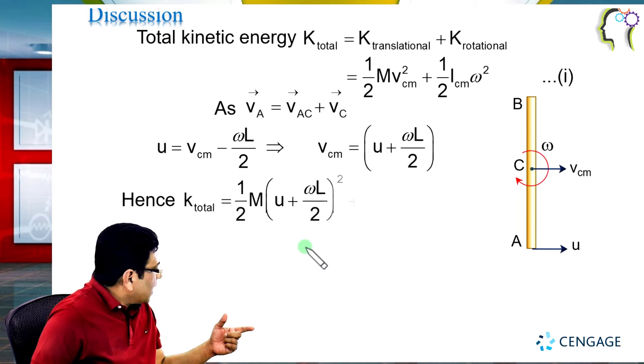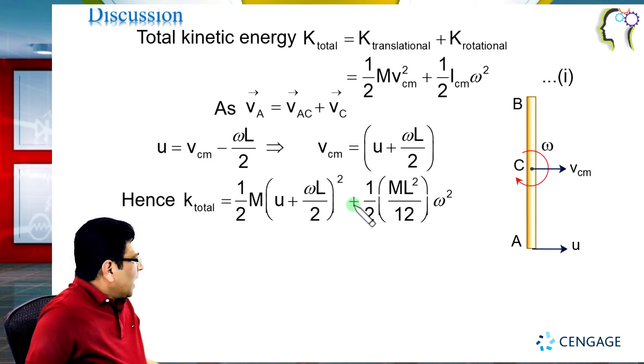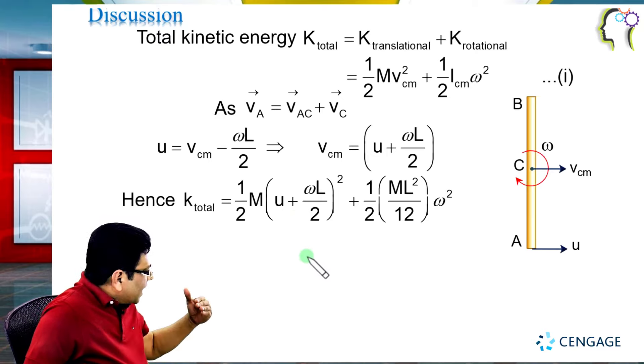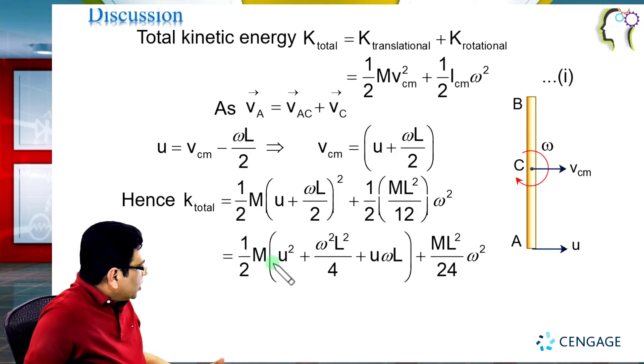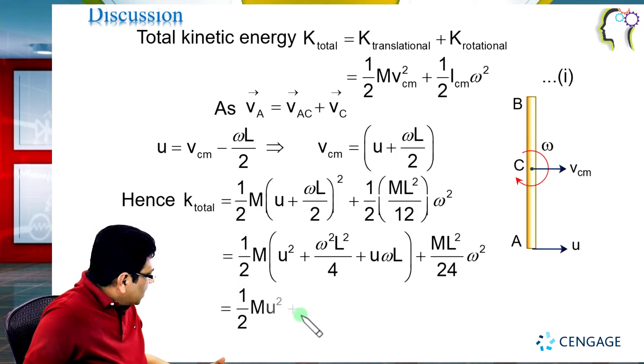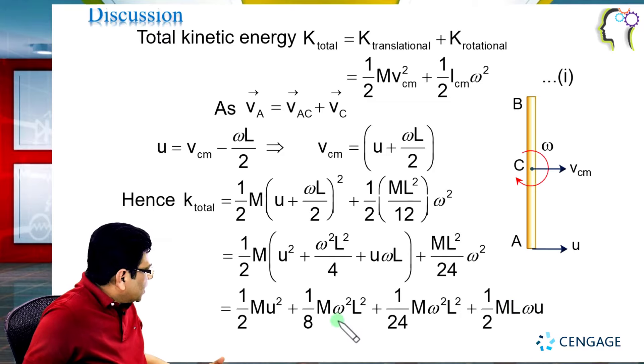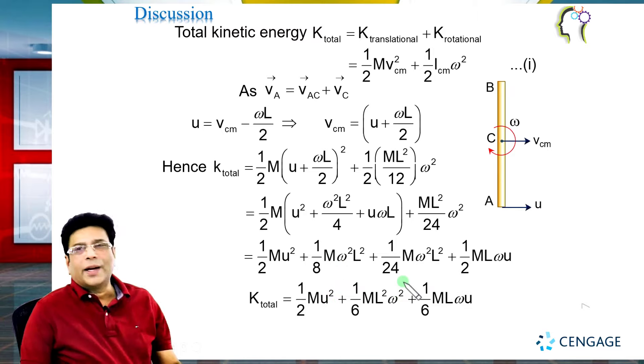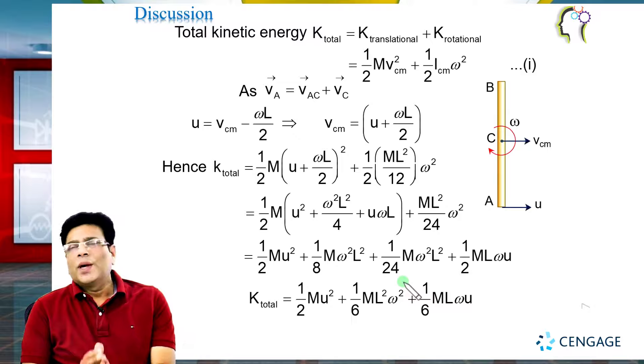Now we will calculate this. I am showing the calculation steps. You should do this calculation yourself. This is the next calculation step. Then we rearrange it. And you can see here, this is 1/8 M omega squared L squared, this is 1/24 M omega squared L squared. This summation, multiplying and dividing by 3, gives 4/24, that is 1/6 M omega squared L squared. This is the total kinetic energy of the rod. This is the required answer.